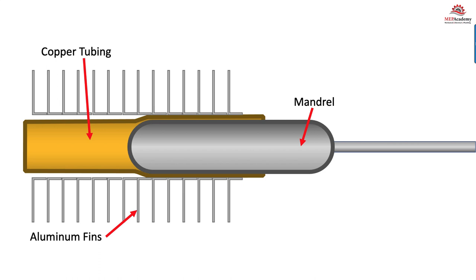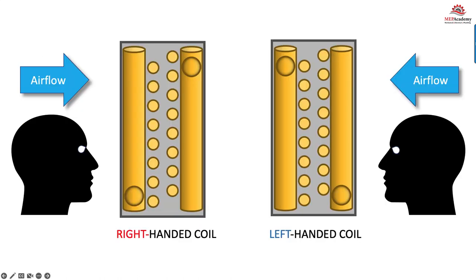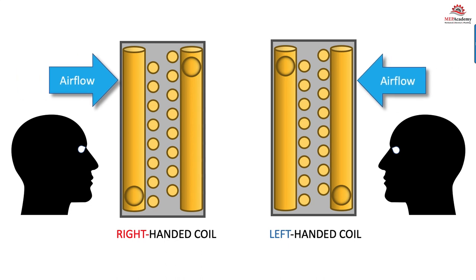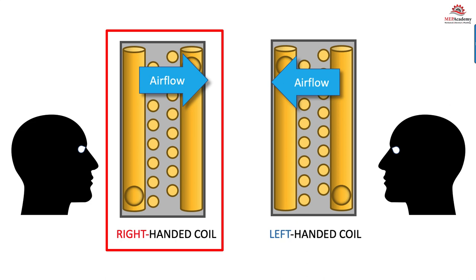The fins surrounding the coils can be configured in various shapes, from flat to corrugated. Coils are considered left-handed or right-handed. This is important because when the coil is installed, you want to make sure that the piping connections are on the correct side of the equipment to avoid extra piping. This can be determined by standing in front of the coil, looking in the direction of airflow with the air at your back. If the connection is on your right, it's a right-handed coil connection; if it's on the left, then it's left-handed.